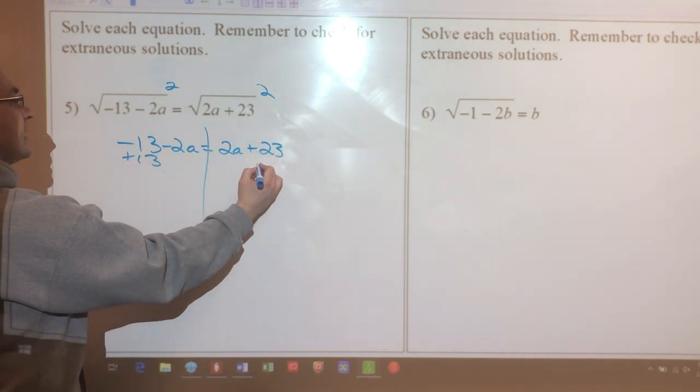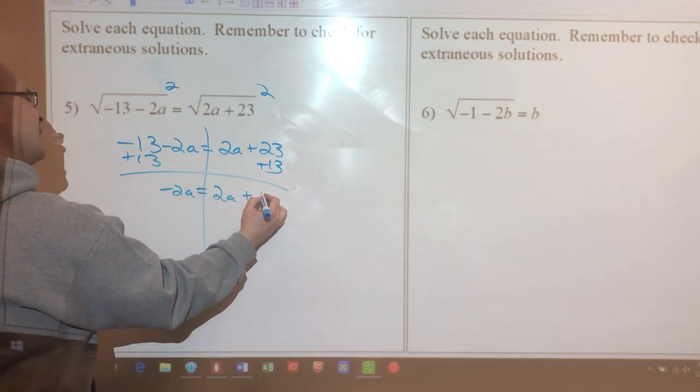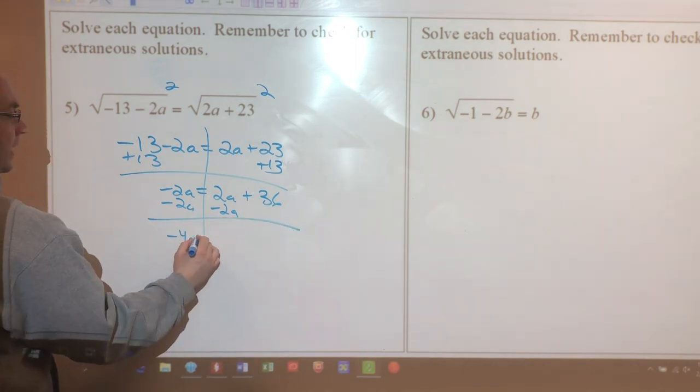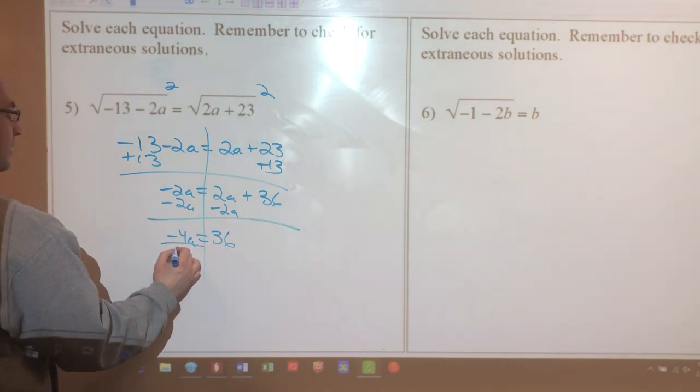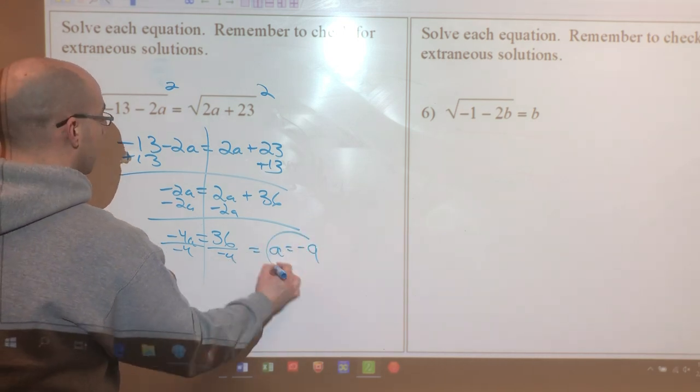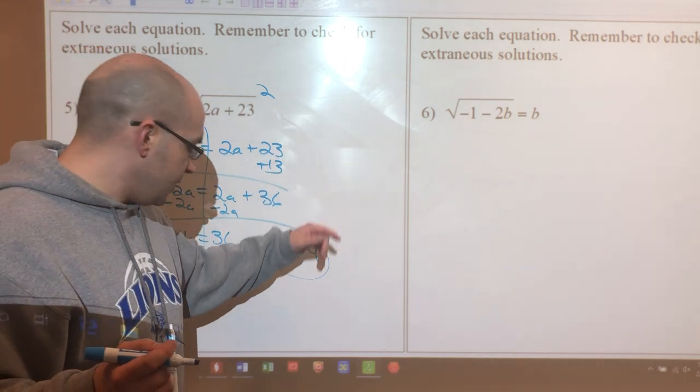Multi-step equation. Add 13 to both sides, I'll get negative 2a equals 2a plus 36. Minus 2a on both sides gives me negative 4a, and that's gonna equal 36. I divide by negative 4 on both sides, I'm gonna get negative 9. Now plug it back in to make sure, and it will work on both sides.